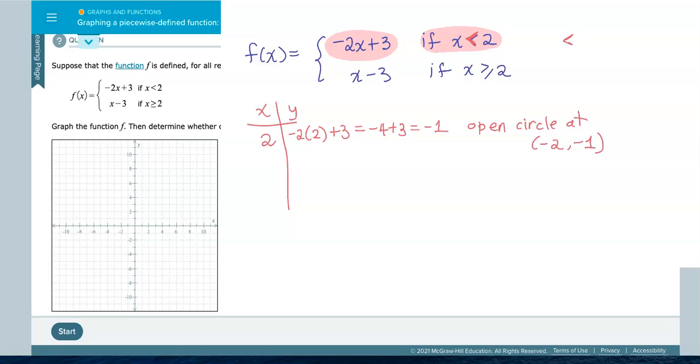And I am plotting an open circle because it said x is less than 2. If it had less than or equal to 2, then I would have plotted a closed circle. But let me go and pick more x values that are smaller than 2. There is 1 and there is 0, and that should be enough.